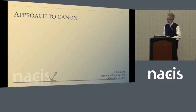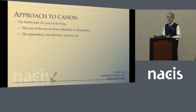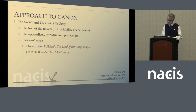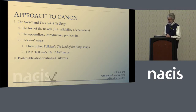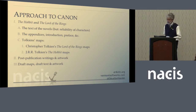To construct an accurate map with as many details as possible, we need to prioritize our sources: A, the text of the novels, keeping in mind the reliability of characters reporting; B, Tolkien's appendices, introduction, and other apparatus of the novels; and C, the maps as published within the novels. Then, Tolkien's own writings and artwork from after 1955, and Christopher Tolkien's revised map of 1980. And finally, draft maps, draft text, and artwork from before 1954. Interestingly, this order of priority is not the order in which the work must be accomplished.